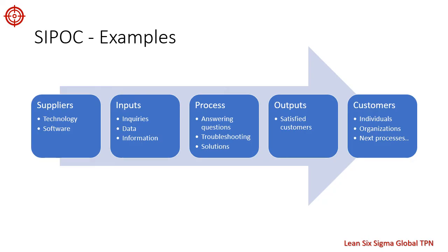Another example of a SIPOC diagram might be for a service-based process, such as providing customer support. The suppliers in this case might include the technology and software needed to manage customer support requests. The inputs could include things like customer inquiries, customer data, and product information.